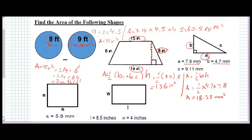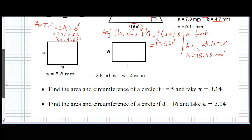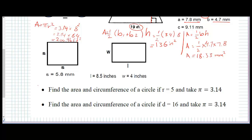Next, we need to find the area of a square. Area of square equals side times side. The side is 5.8, so 5.8 multiplied by 5.8 equals 33.64 millimeters squared.